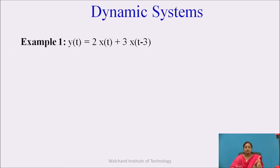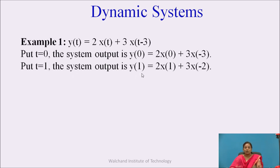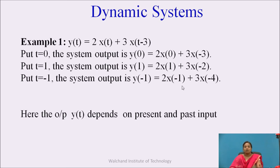For example, y(t) = 2x(t) + 3x(t−3). Putting t = 0: y(0) = 2x(0) + 3x(−3). Putting t = 1: y(1) = 2x(1) + 3x(−2). Putting t = −1: y(−1) = 2x(−1) + 3x(−4). If you observe all these, the output y(t) depends on the present and past input. So this system is a dynamic system.